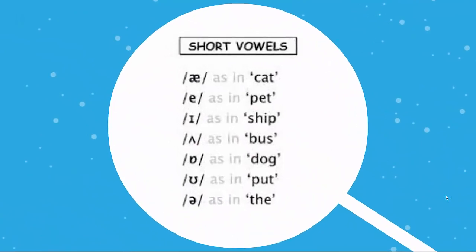Here are the short vowels: æ as in cat, e as in pet, ɪ as in ship, ʌ as in bus, ɒ as in dog, ʊ as in put, ə as in the.